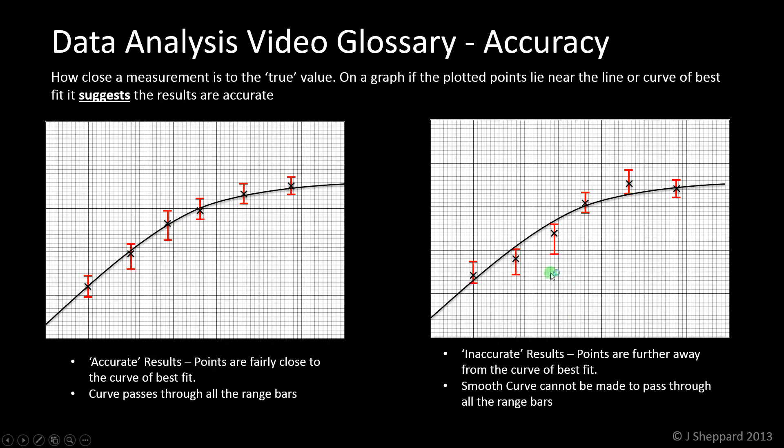And if we look at the graph on the right, we see a similar sort of trend, but this time the line of best fit, the curve of best fit, it's not possible to have a nice smooth curve that goes through all of the range bars. You can see it misses the second range bar and the third one, and the fifth one just about sort of skims the bottom of it. So we generally tend to say that those results are less accurate or inaccurate, as a smooth curve cannot be made to pass through all the range bars. We could do it, but we'd have to have the curve wiggle up and down, and that wouldn't therefore count as a smooth curve.